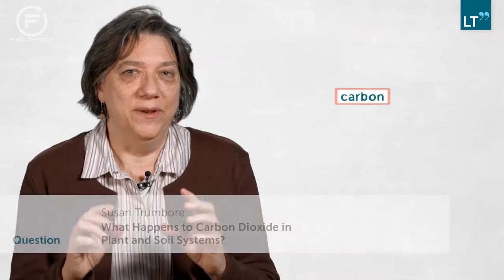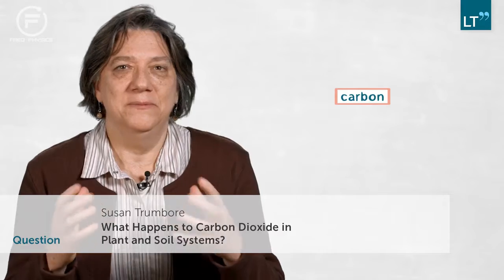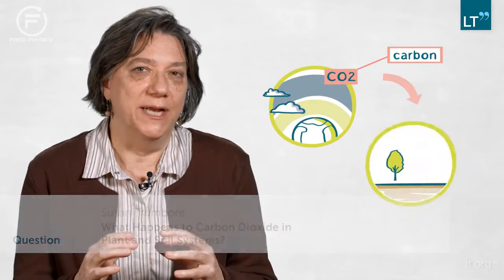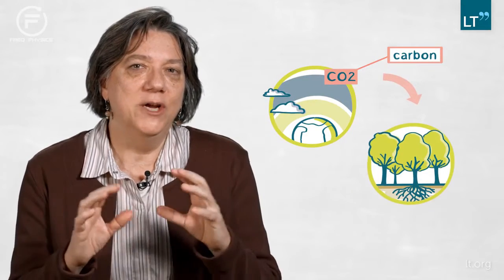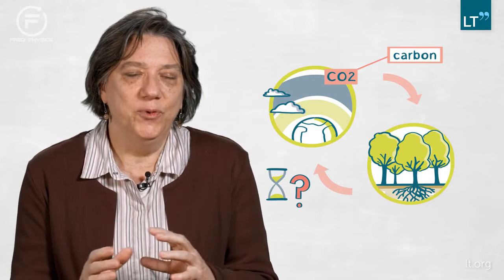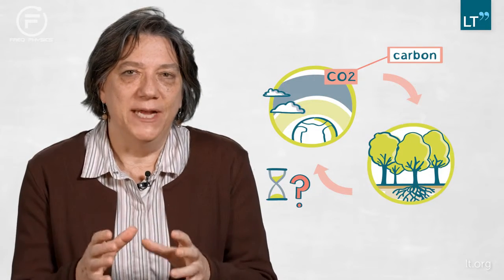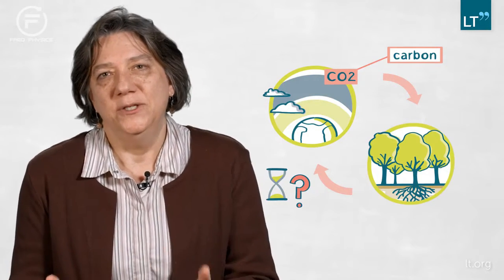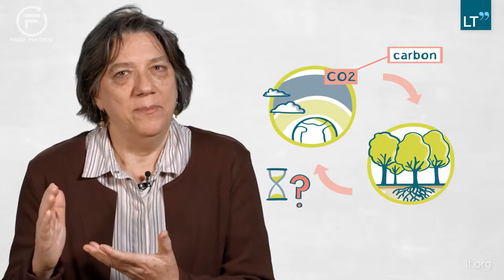My basic research question is: how long does it take the carbon that gets fixed from atmospheric CO2 by plants to travel through the plant-soil system until it ends up back in the atmosphere as CO2?